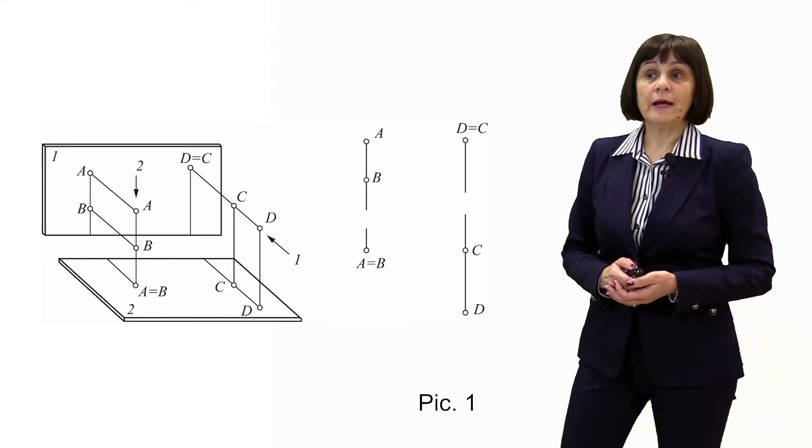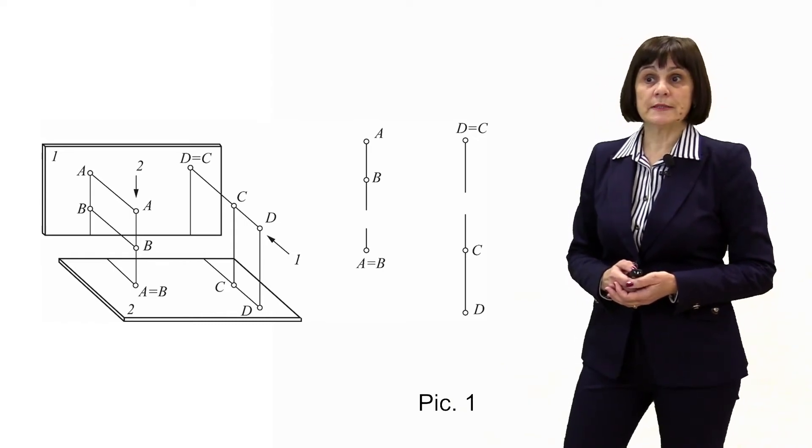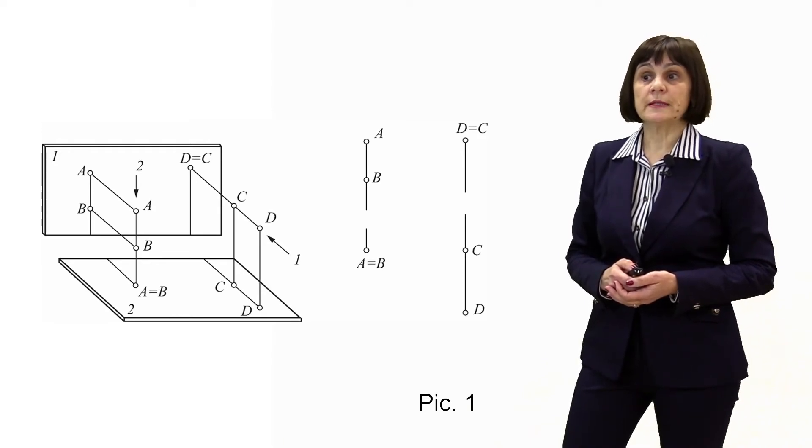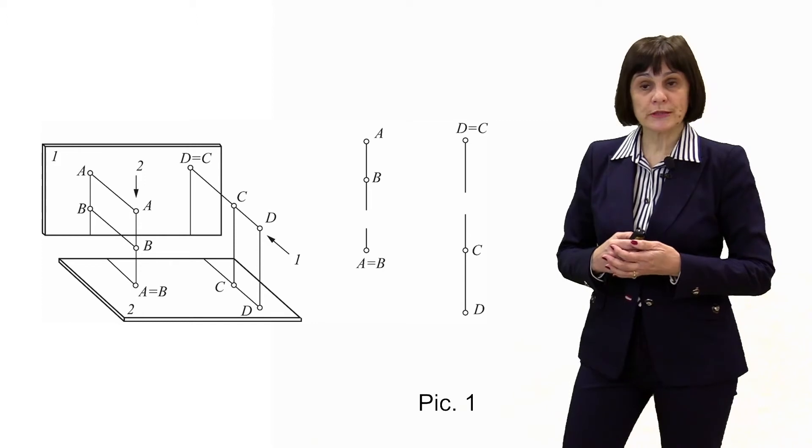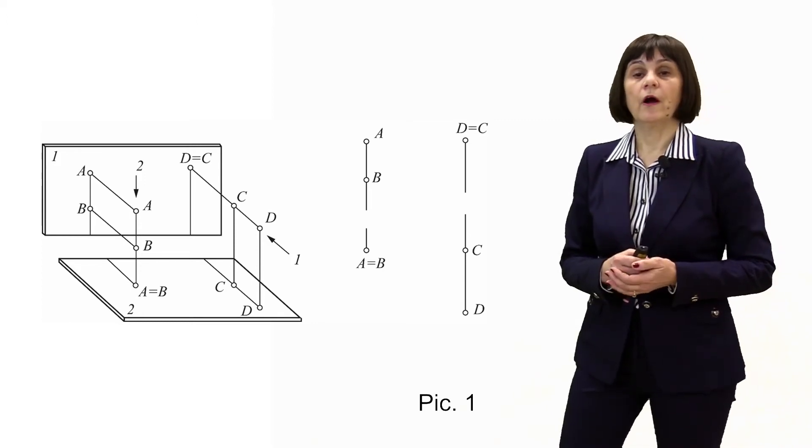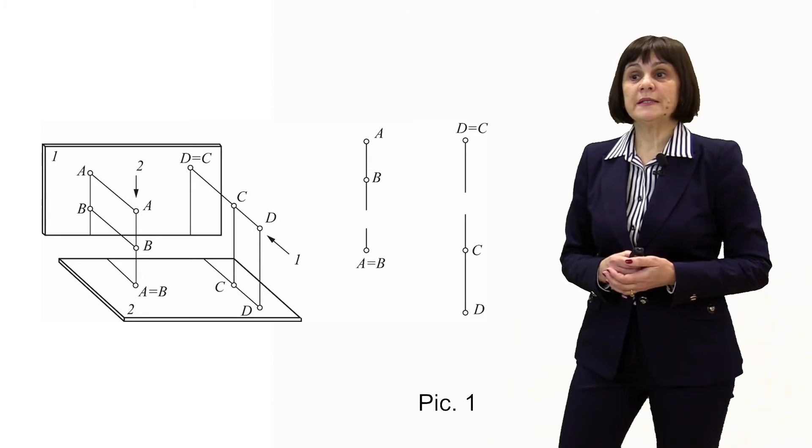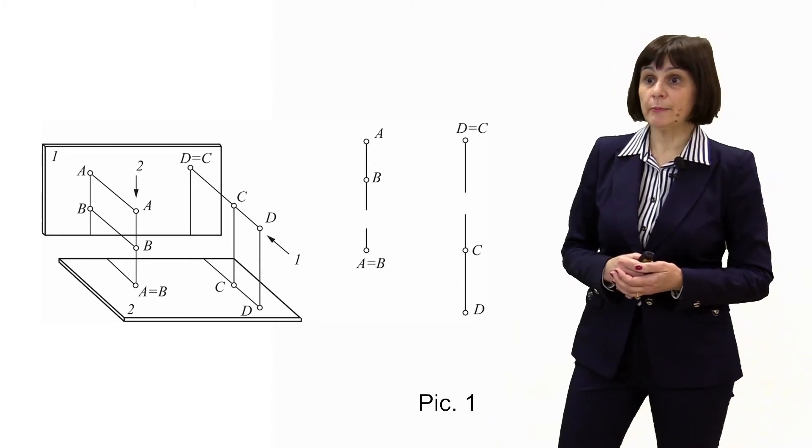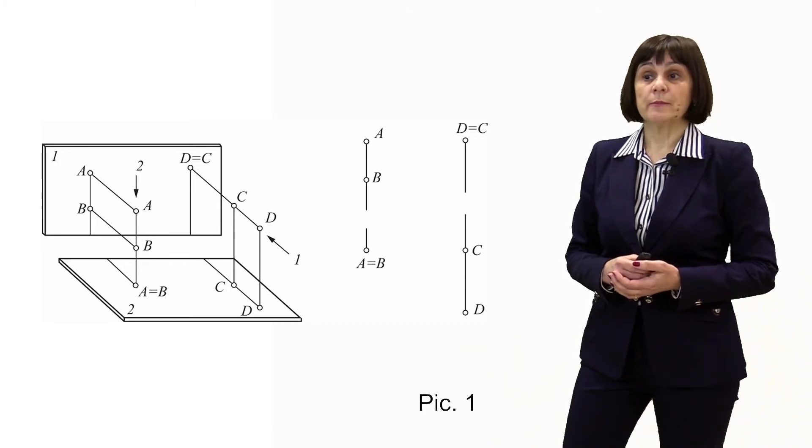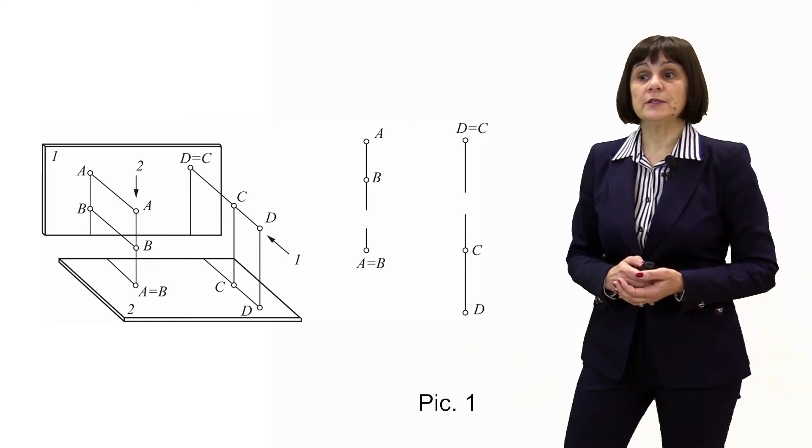From two frontally competing points on the frontal projection, the point that is located closer to the observer is visible. From two competing points on the profile plane of projection, visible is the point which is located to the left.